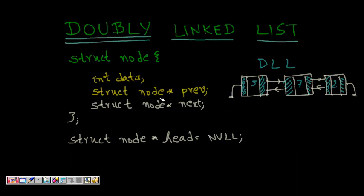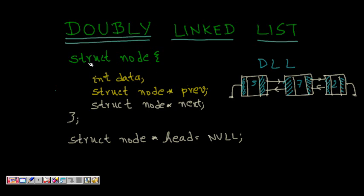We are going to learn about insertion in a doubly linked list. First, let's look at the structure of a node. Each node in a doubly linked list has three parts: the data part (which could be an integer, char, or any collection), the address of the previous node, and the address of the next node. This means we can move both forward and backward in a doubly linked list.